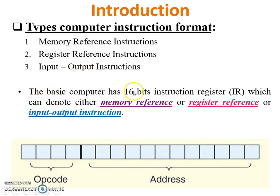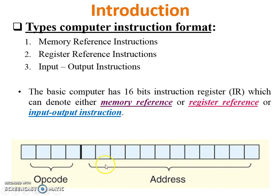The basic computer has a 16-bit instruction register which can denote either Memory Reference, Register Reference, or Input-Output Instruction. In this figure you can see the basic diagram of the instruction register. It is made of 16 bits — the first 12 bits, 0 to 11, denote the address, and the last 4 bits from 12 to 15 denote the opcode.